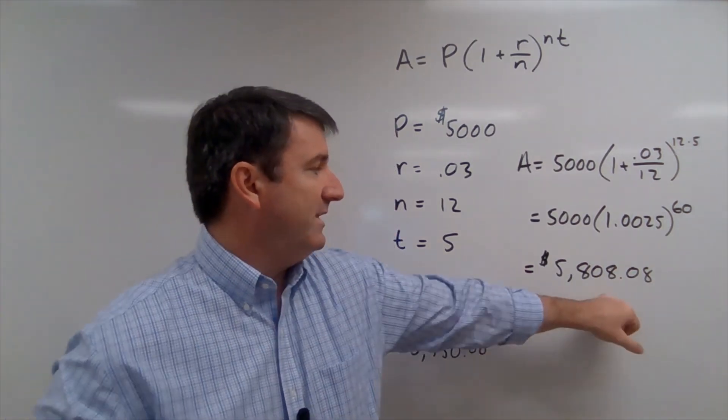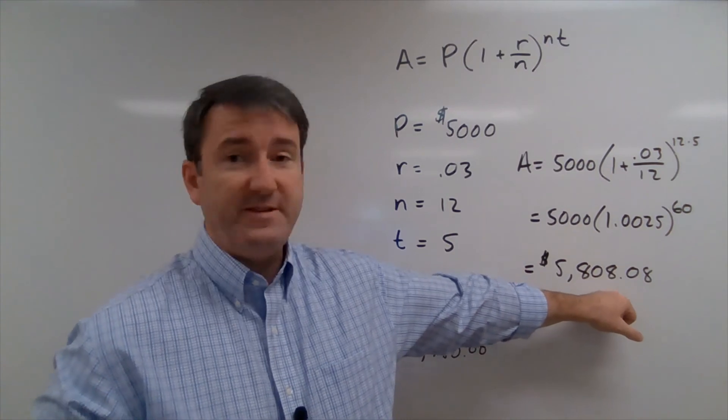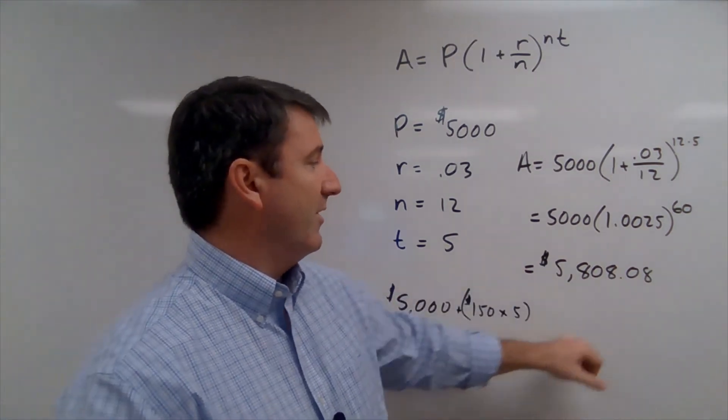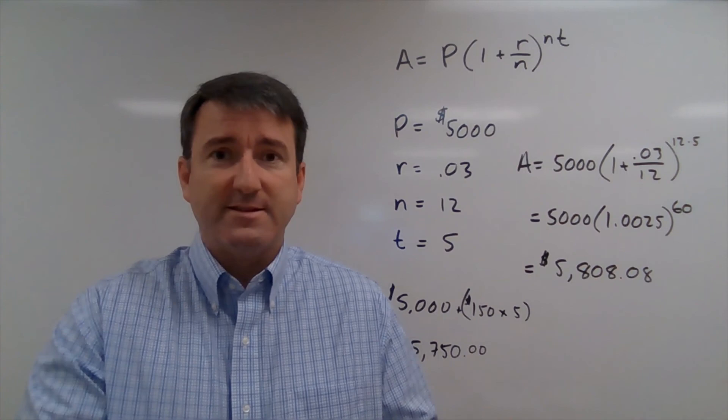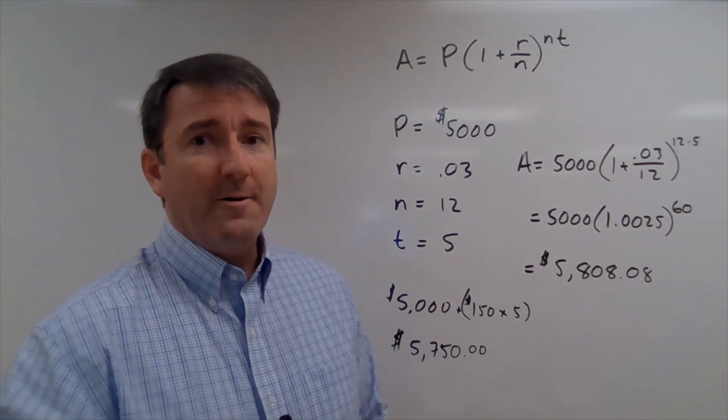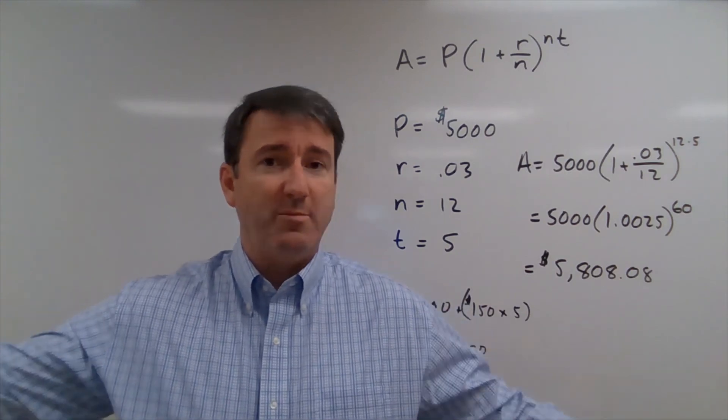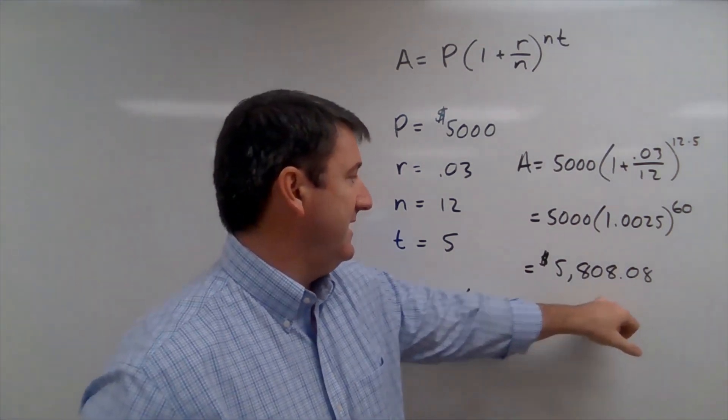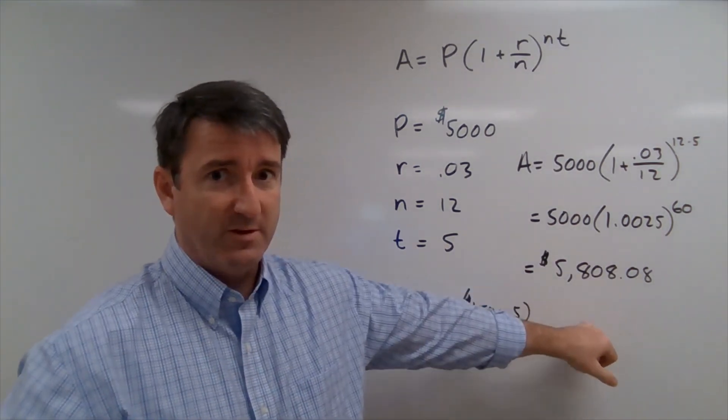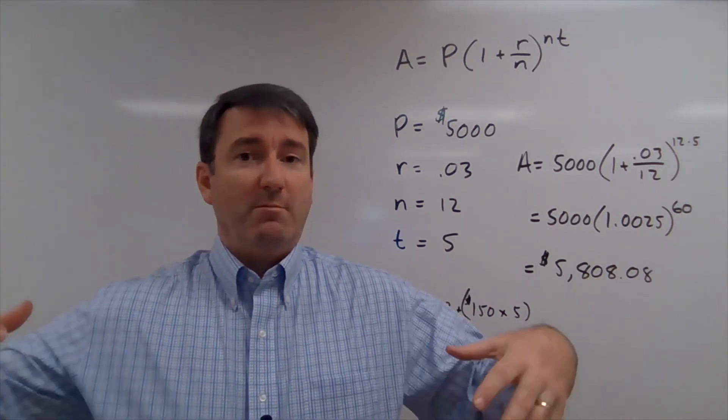So it's only a difference of $58. By compounding our interest, we've earned an extra $58. Now that's not a lot. But if you did this over a longer period of time, you would see this difference between those amounts grow by a lot.